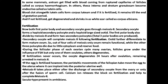The secondary oocyte reaches the fallopian tube and is present in the ampulla region. The sperm travels from the vagina to the cervix and then to the uterus, and from the uterus towards the fallopian tube at the junction of the ampulla and isthmus region. Fertilization mainly occurs at this junction of the ampulla and isthmus, where the secondary oocyte also moves to meet the sperm.